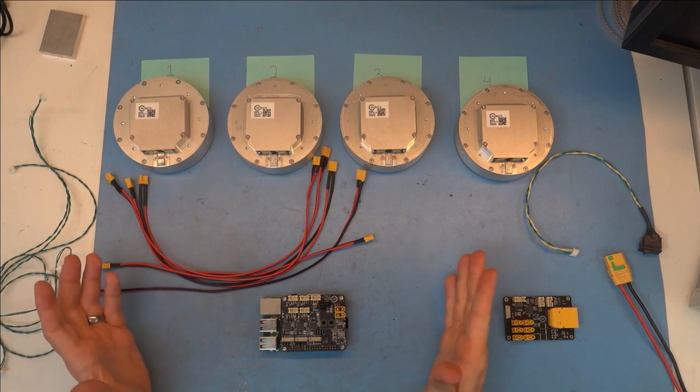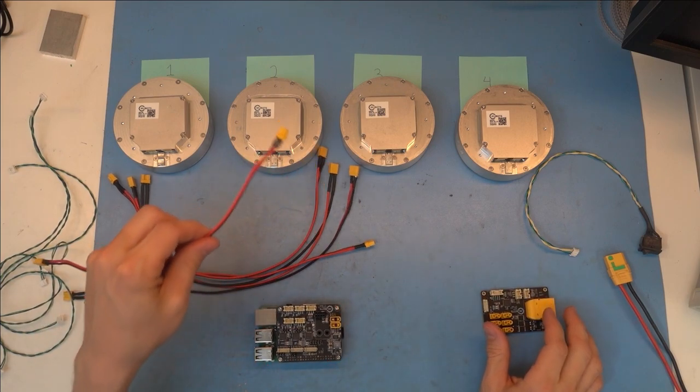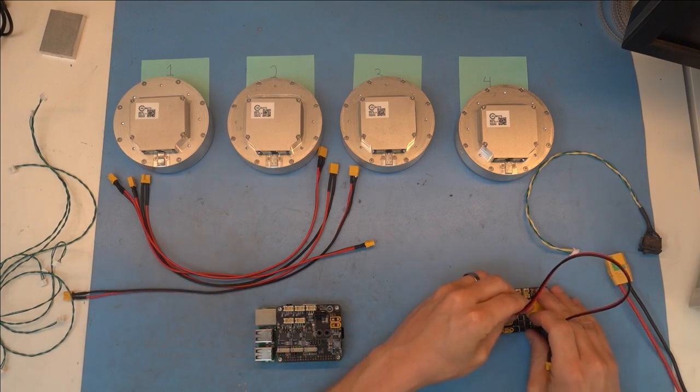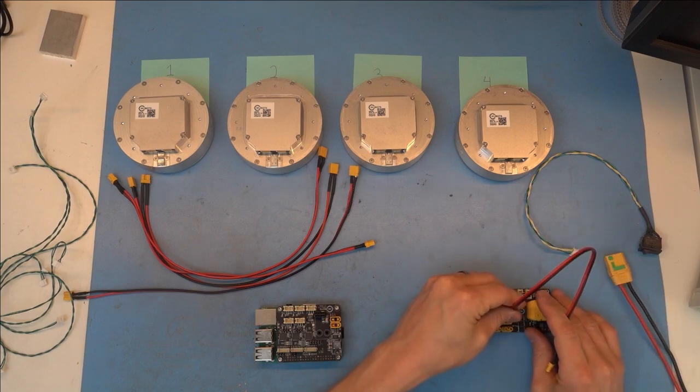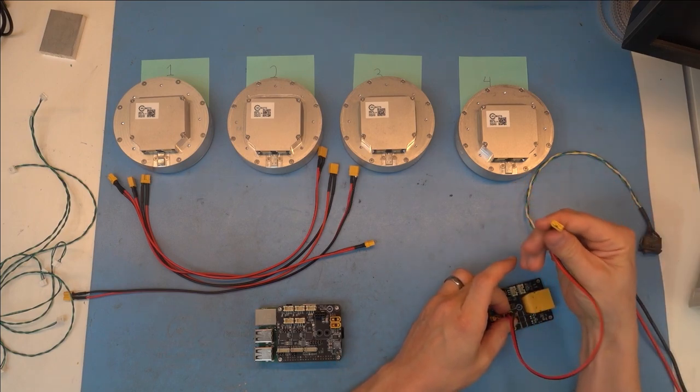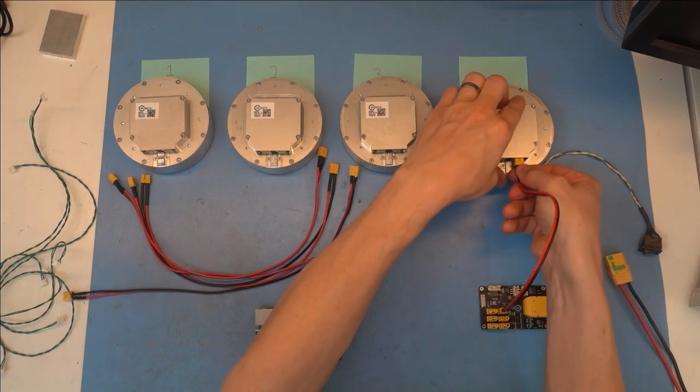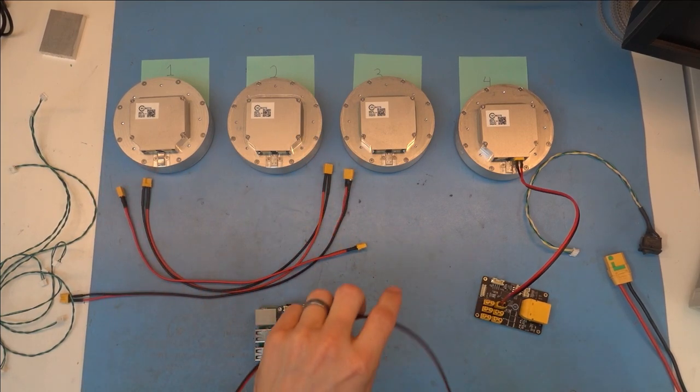So that we can power everything up simultaneously, I'll use the power disk board and connect these XT-30 power cables from it to all of the various devices. Each of these QDD100s I have previously assigned a unique identifier to, as evidenced by the post-it notes.